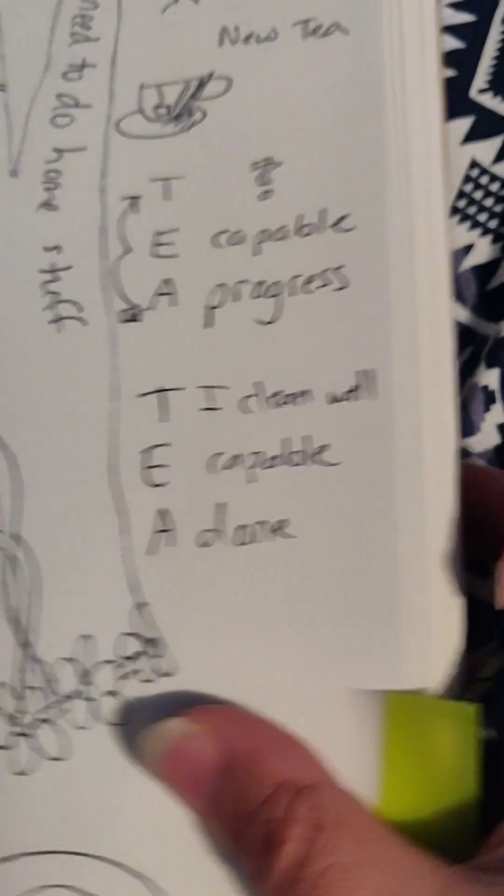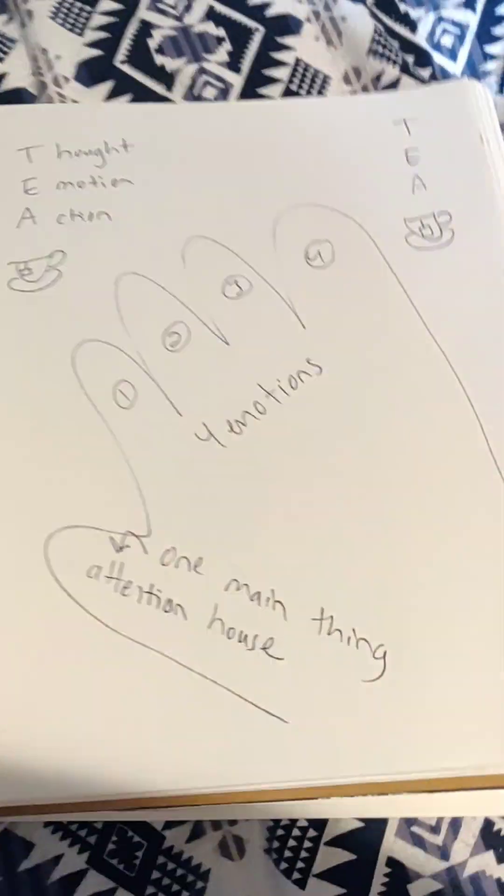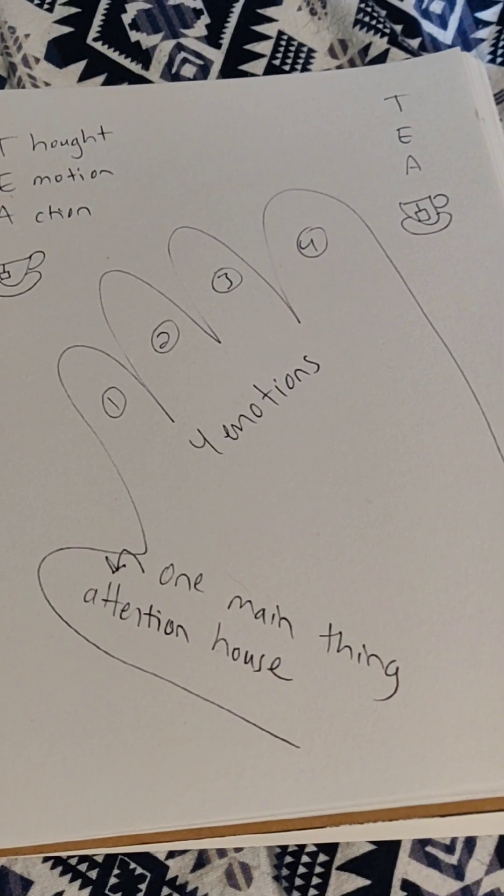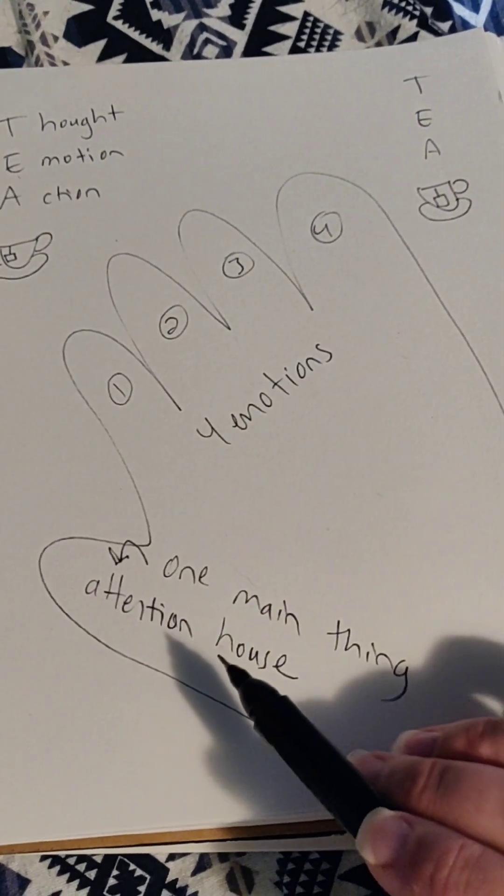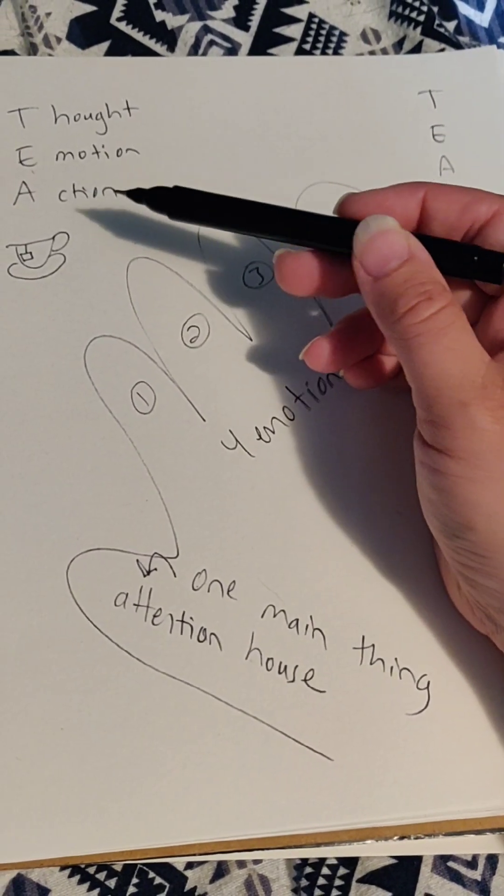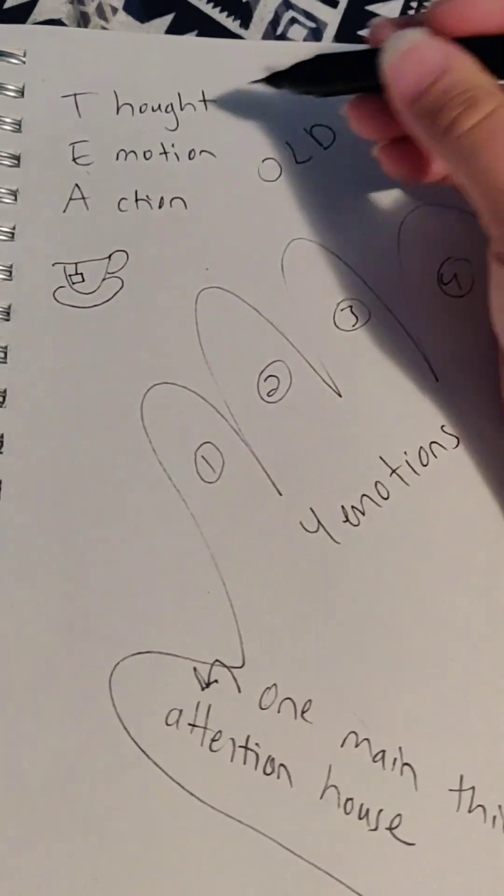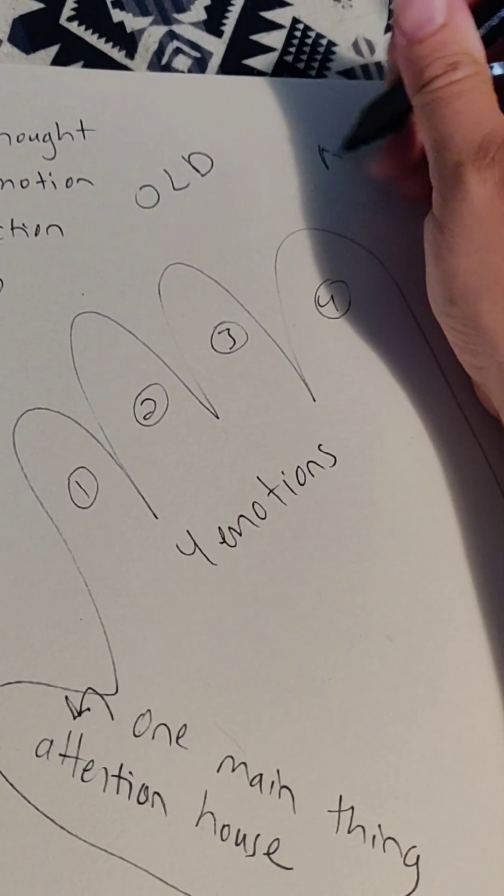So there you have it—your five finger check-in: four emotions, one main thing, your thought, your emotion, your action. This is your old thought, emotion, and action, and then a new one.